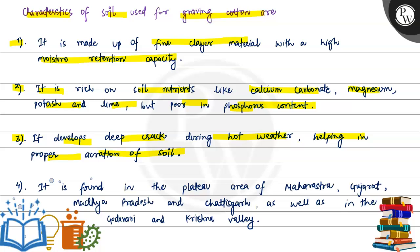The fourth point is it is found in the plateau area of Maharashtra, Gujarat, Madhya Pradesh, and Chhattisgarh, as well as in the Godavari and Krishna Valley.